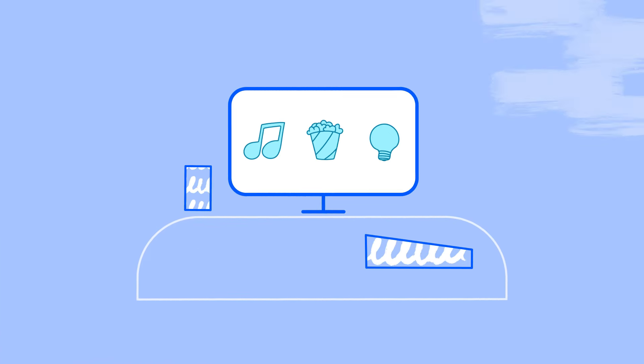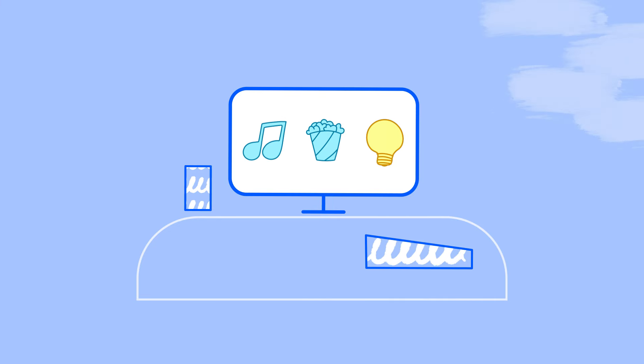Families everywhere enjoy video content in family spaces in their home, such as the TV or gaming console in the living room. With smart TVs and connected devices, parents are finding age-appropriate content for their children through applications instead of channels.